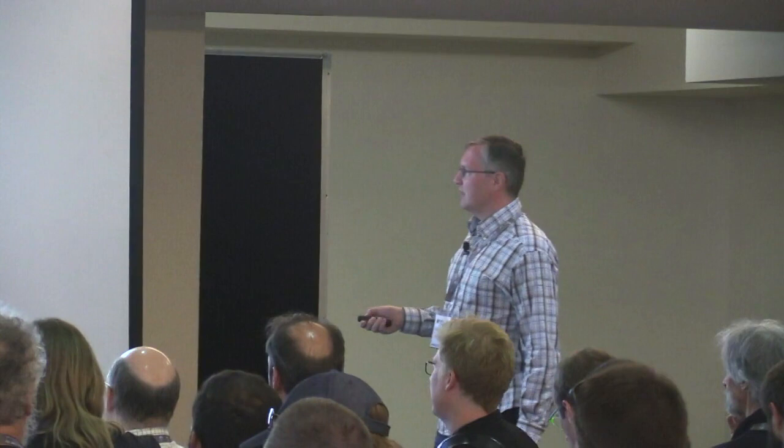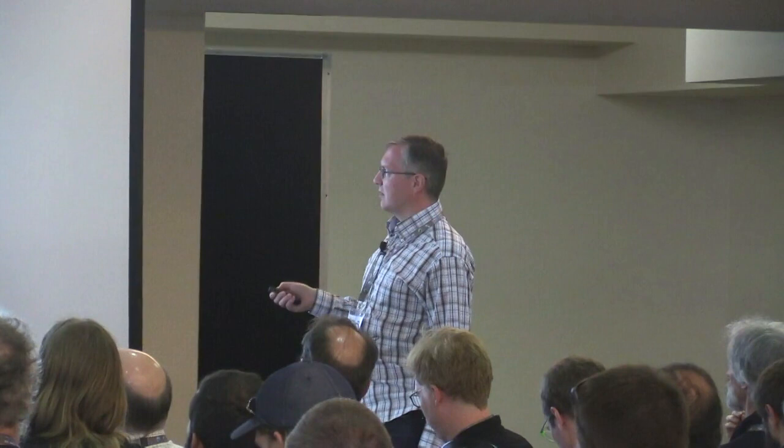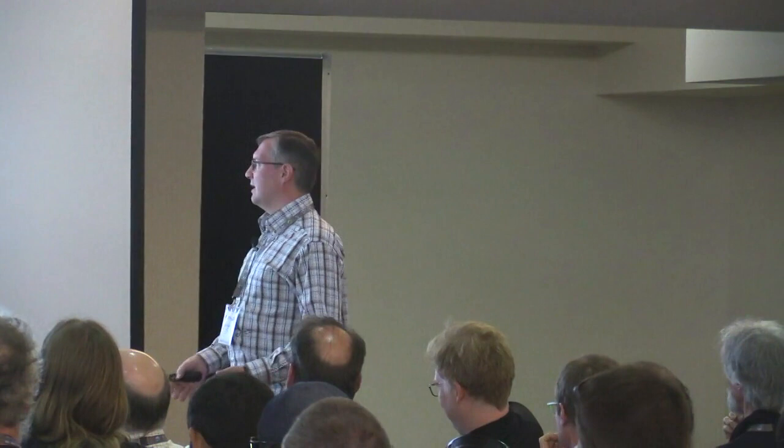This variant has all the problems the previous one had, plus additional issues: there is an extra wake-up because queuing a work item requires waking up at some point, and there is a task switch involved — which doesn't need to be necessary.